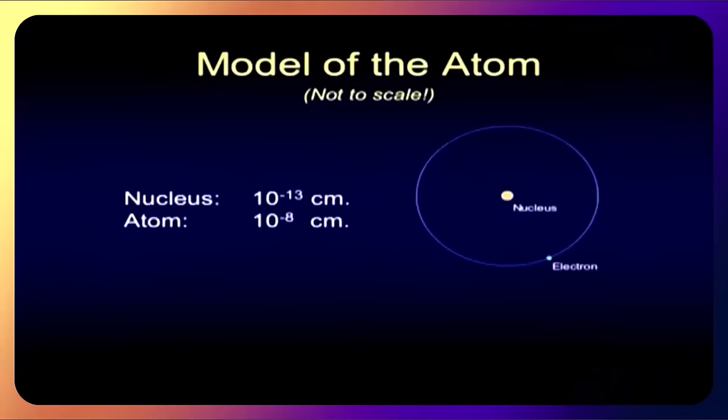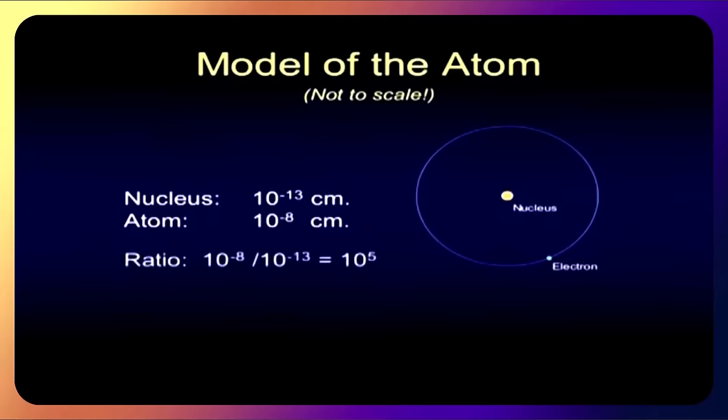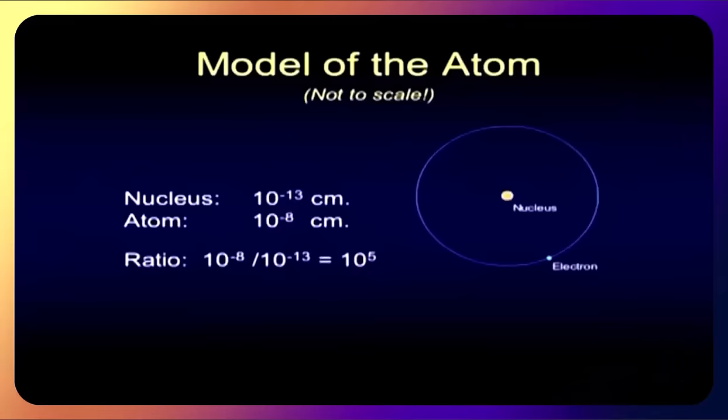We know that the nucleus is about 10 to the minus 13 centimeters. The atom itself has a diameter of 10 to the minus 8 centimeters. Now you say, well, I can't relate to those small numbers. You don't need to. You just want to look at the ratio of them. In other words, if the atom is 10 to the minus 8 and the nucleus is 10 to the minus 13, that means that the ratio of those is 100,000 to 1. The atom is 100,000 times in radius or diameter of the nucleus.